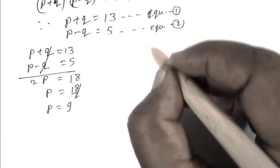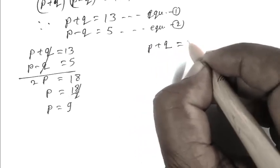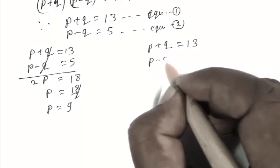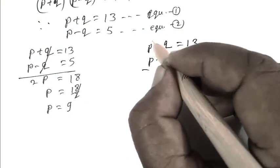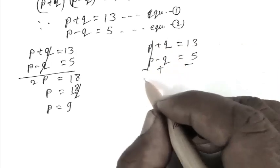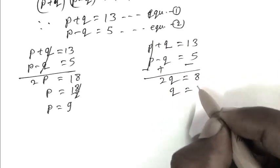By subtracting, we get P plus Q equals 13, P minus Q equals 5. 2Q equals 8, Q equals 4.